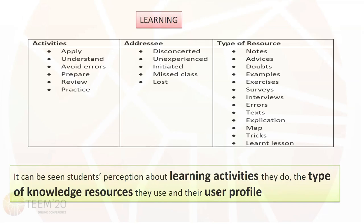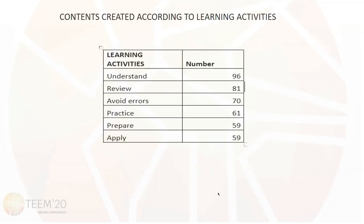In relation to learning, it has been divided into three groups: learning activity, which is associated with the created resource, the profile of the resource recipient, and the type of resource. This table shows the classification defined by the students for each subgroup. This table shows the contents created according to learning activities. The first column shows the type of knowledge uploaded to the repository, and the second one shows the amount of knowledge uploaded for each branch.